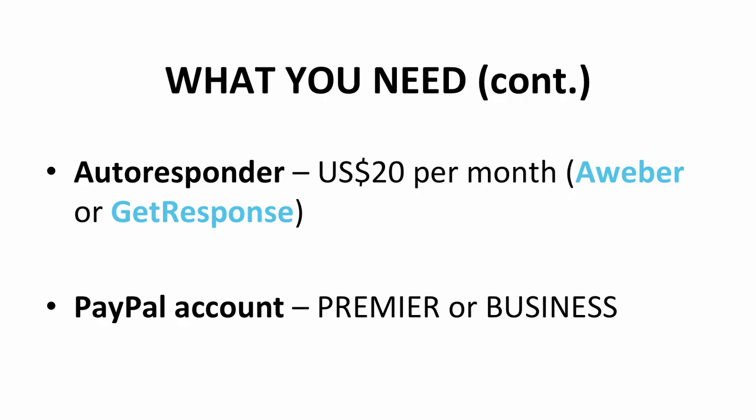An autoresponder will also come in handy. It is a program that allows you to respond to emails automatically. When your email list builds up, you will have a lot of people to respond to. For this, it's recommended that you use Aweber or GetResponse. This service will cost you 20 US dollars per month. Lastly, you'll need a PayPal account. To run an online business, you will need to choose between the premier or business PayPal account. In their website, they'll tell you the difference.